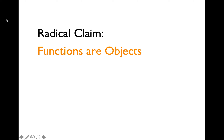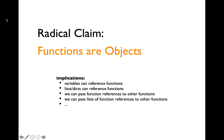Recall that everything is an object in Python, which includes primitive types like integers, strings, floating points, and so on. We then saw that variables contain references to objects. We also covered this concept where lists and dictionary objects can contain references to other objects as items.